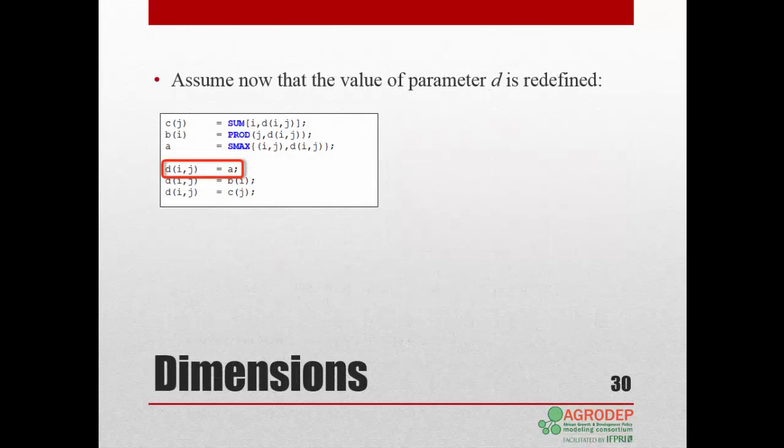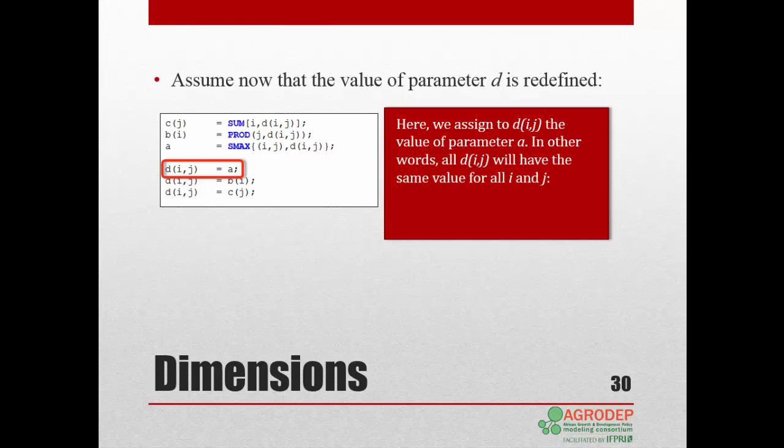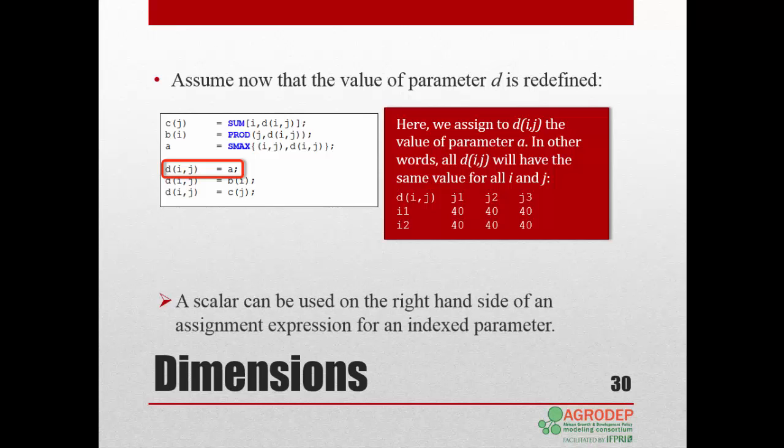Assume now that the value of parameter d is redefined. Here we assign to dij the value of parameter a. In other words, all the elements of dij will have the same value. A scalar can be used on the right-hand side of an assignment expression for an index parameter. It will give the same value to all the elements of the parameter.